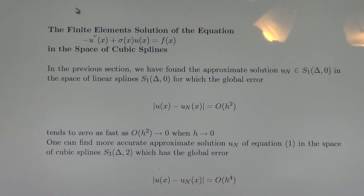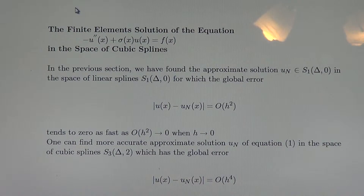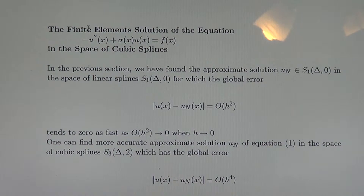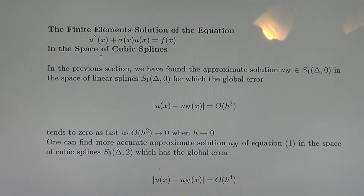Welcome to the next part of the lecture on the Finite Elements Method: the finite element solution of the equation minus second derivative of U plus sigma U equals F, in the space of cubic splines.